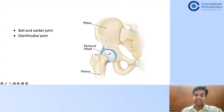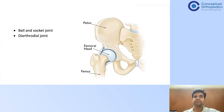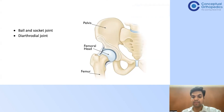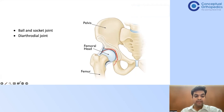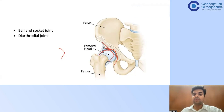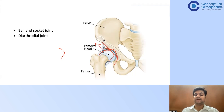If either one of them is not matching — if there is an alteration — then the head is not going to stay in the socket. This is exactly what you see in DDH. What happens in DDH — congenital dislocation of hip? This shape has to be maintained, an exact counter shape. If the acetabulum shape is not maintained and instead remains straight while the head is round, the head doesn't stay in the joint — it just starts slipping off from the acetabulum.